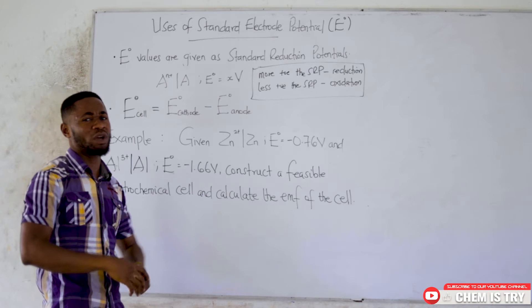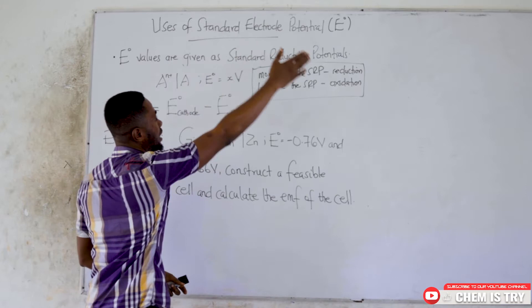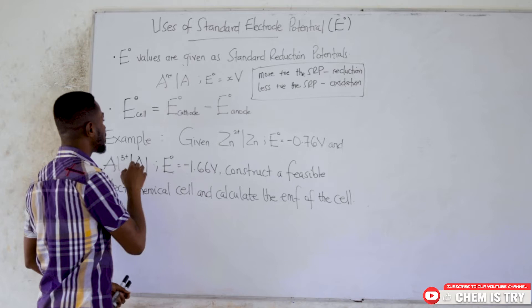Why do we bother measuring the standard electrode potential values? What is the essence? Today we are here to talk about the uses of the standard electrode potential values. The first use I'm going to talk about is that it is used to calculate the EMF of a cell.